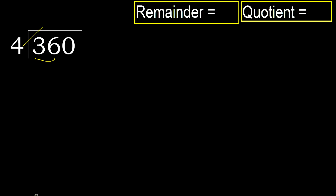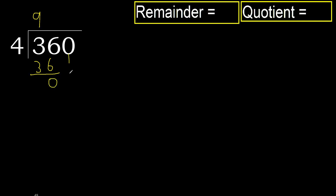4 multiply by which number is nearest to 36 but not greater? 4 multiply by 9 is 36. 36 is not greater.